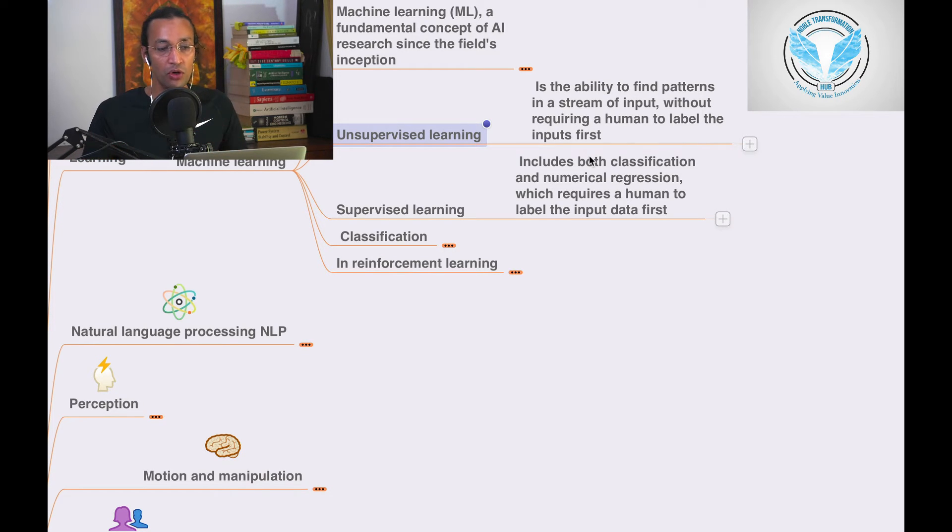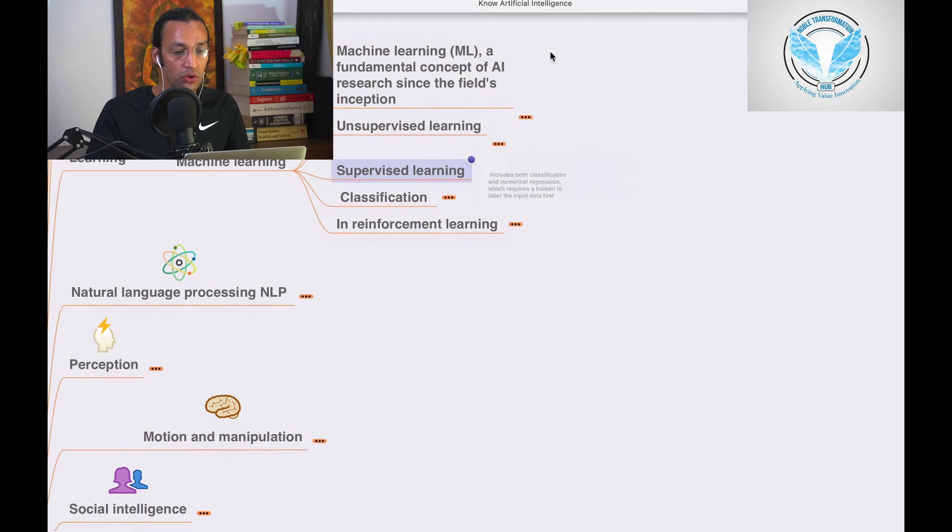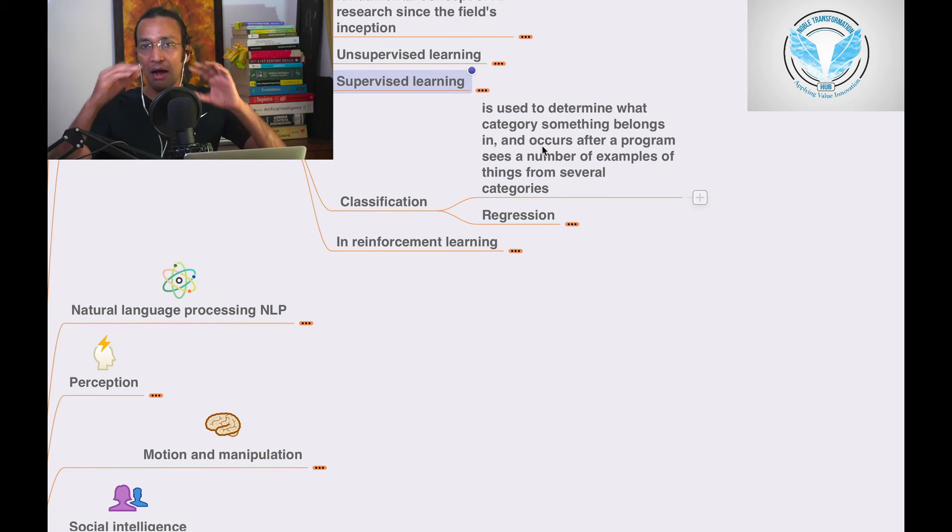Classification is used to determine what category something belongs in, and occurs after a program sees a number of examples of things from several categories. It is used to categorize data into different things so we can classify properly.